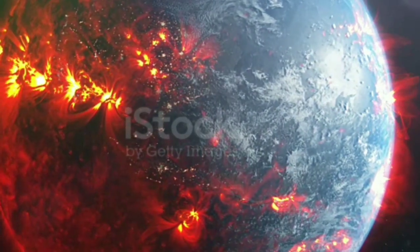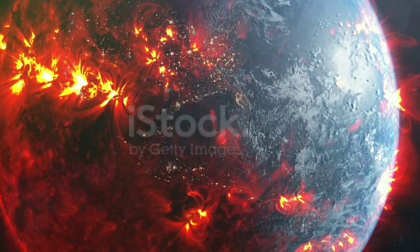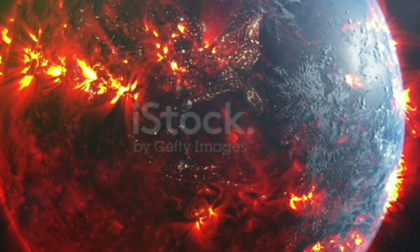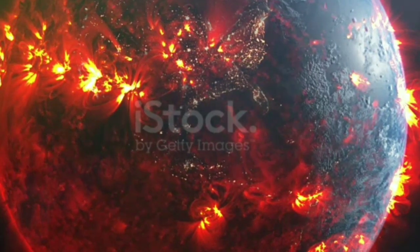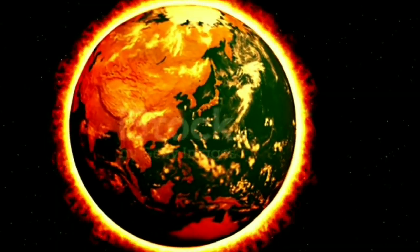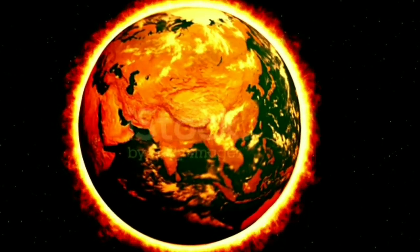Like Earth, Gliese 486b is a rocky planet, but that's where the similarities end. Our neighbor is 30% bigger and almost three times heavier than Earth. It's possible that its surface, which is hot enough to melt lead, is scattered with glowing lava rivers.